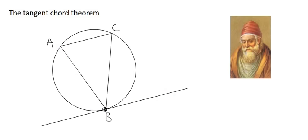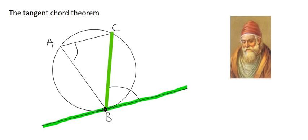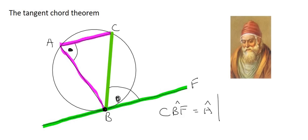We can try it in a different way. Using the tangent once again and a different chord, we locate the angle in between those two. What Euclid found was that that angle will be equal to any other angle that chord makes — which would be angle A, because chord BC forms A. So that big angle between the two green lines equals angle A. The reason is we're using a tangent and a chord, so we call it the tan-chord theorem.